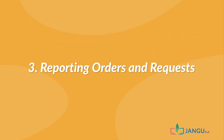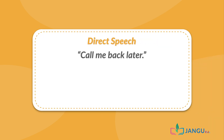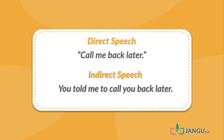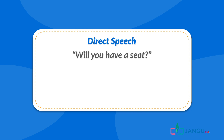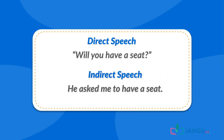3. Reporting orders and requests: When you give someone an order, you use just the verb without a subject, and to report an order, we use 'tell' and the infinitive of the verb. An example is — Direct speech: 'Call me back later.' Indirect speech: You told me to call you back later. When making a request, you normally use words like can, could, or will. To report a request, we use the verb 'ask' and the infinitive form of the verb. For example — Direct speech: 'Will you have a seat?' Indirect speech: He asked me to have a seat.